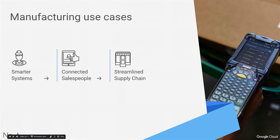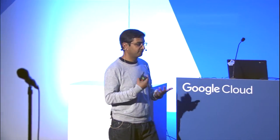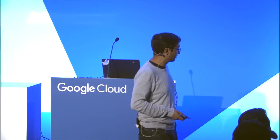Another great example is manufacturing: how can you put these kinds of devices onto a shop floor to make factory floors more efficient? This could be through smarter systems, connecting salespeople directly to those systems, and making the supply chain better. A great example has been Sanmina, a customer that has been using G Suite and Chrome for a very long time and has really figured out the impact of how this can help their business. I'm going to turn it over to Srinivad Ramaswamy to tell you a little bit about what Sanmina has been doing.